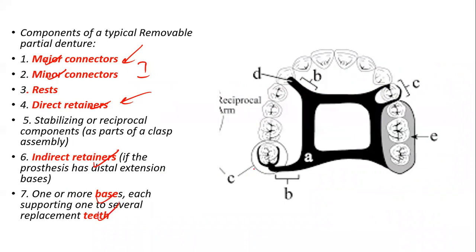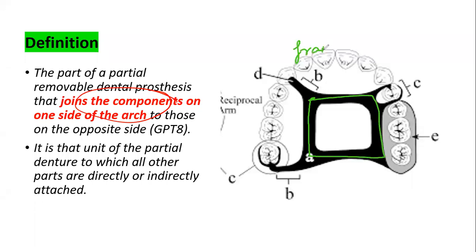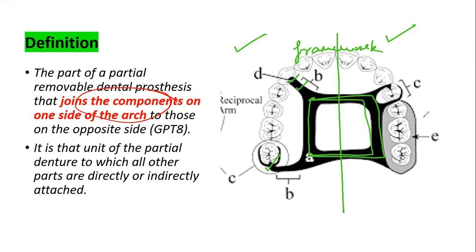We had seen that this component is our major connector and this component is the minor connector. We had also studied what a major connector basically is — it is a part of the RPD which joins the components on one side of the arch to the other side. This supporting framework joins components on one side of the arch to the other side, and the components are the rest, the minor connector, the direct retainer, denture base, artificial teeth, and another direct retainer.